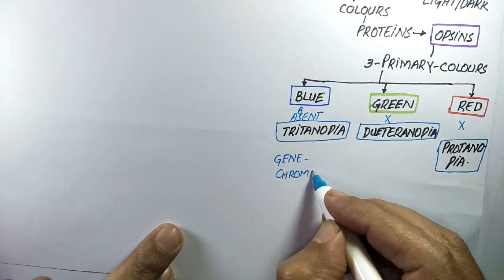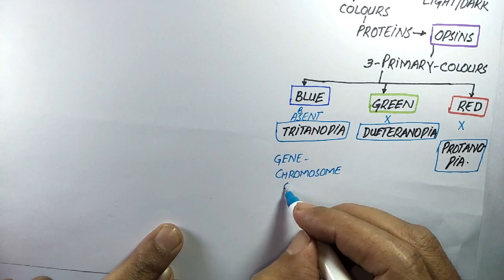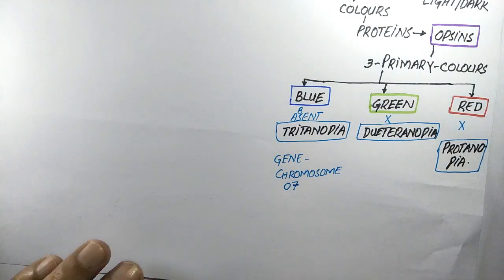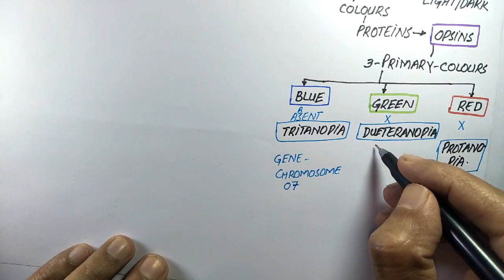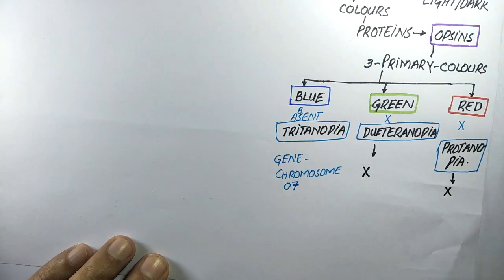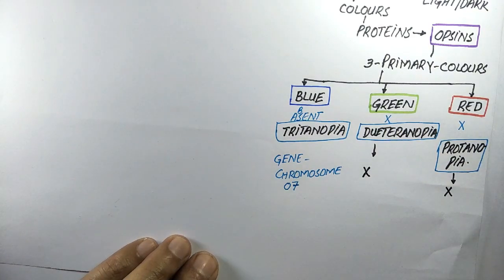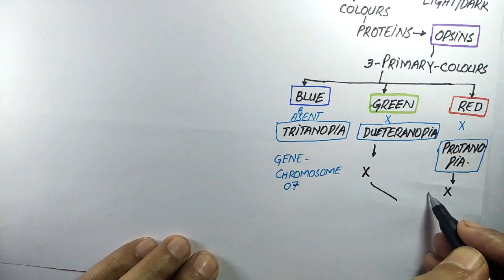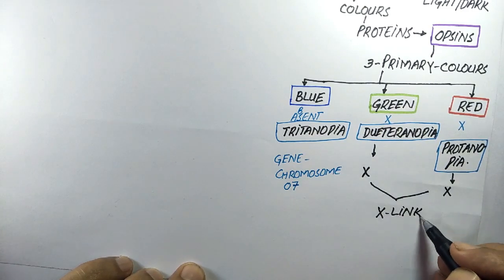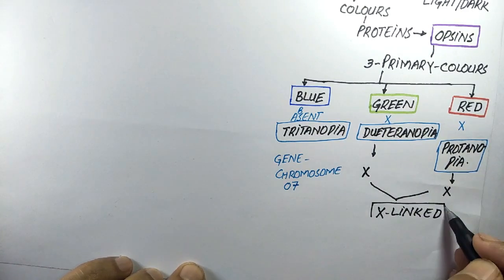The gene for the blue opsin is present on chromosome number seven and is an autosomal trait, whereas the genes for green and red opsins are present on the X chromosome, which is why they are called X-linked genes.